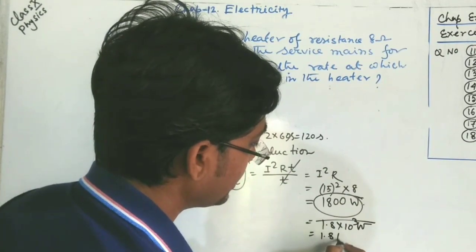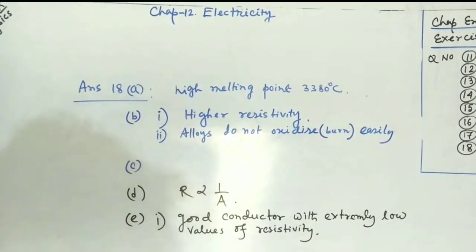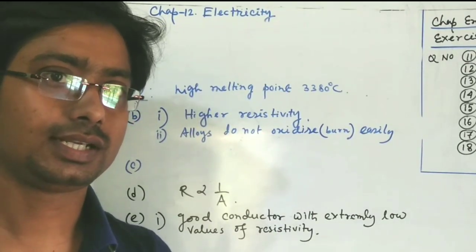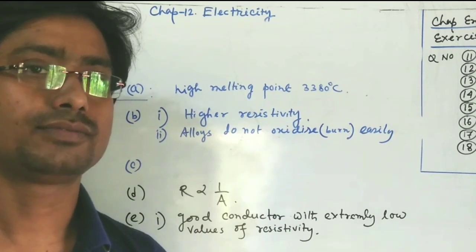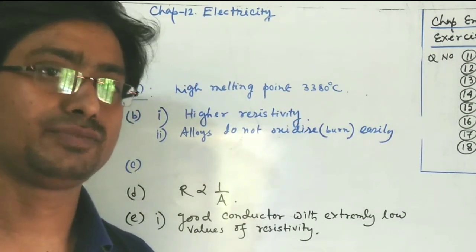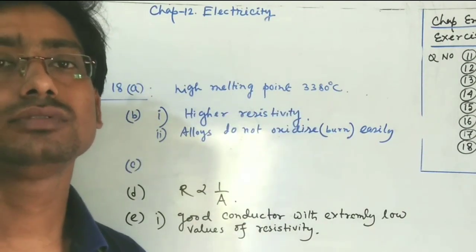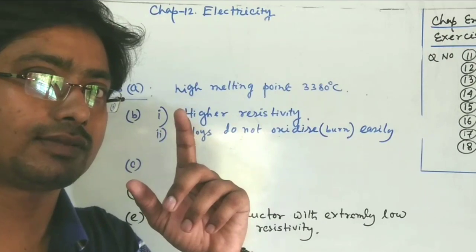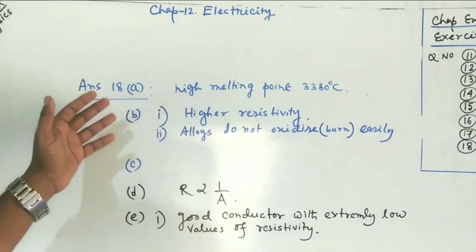Question 18a: Why is tungsten used exclusively for the filament of electric bulbs? Electric heating in incandescent bulbs requires a material that can withstand very high temperatures. Tungsten has a very high melting point of 3380°C, so it can bear such high temperatures without melting, though the lifetime of incandescent bulbs is less compared to CFL and LED.